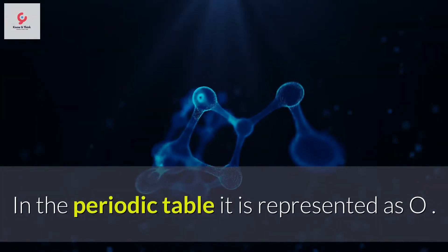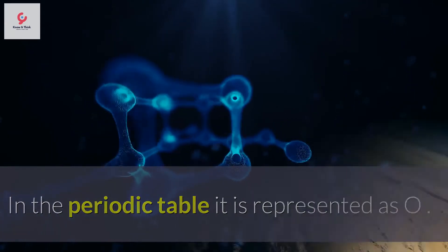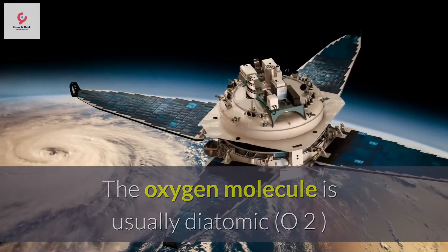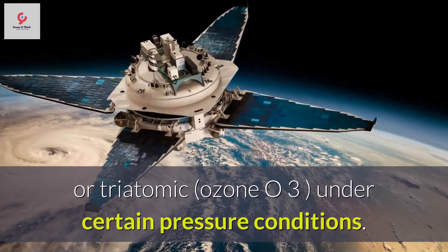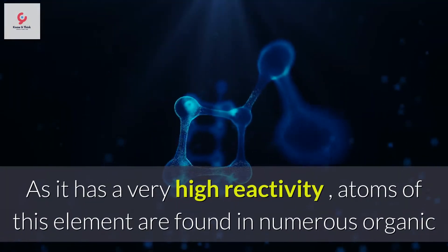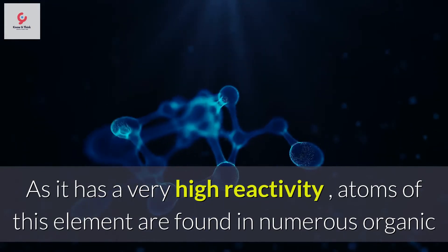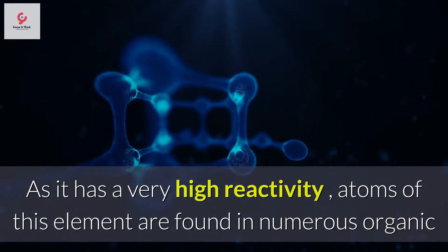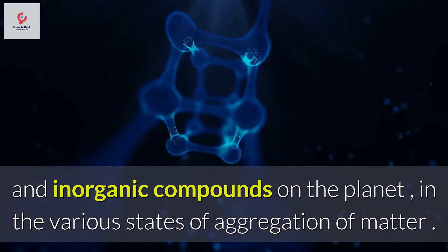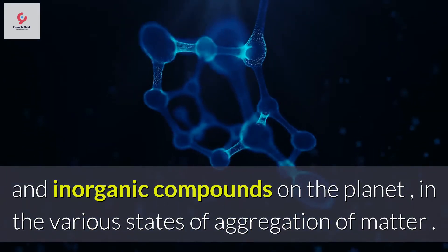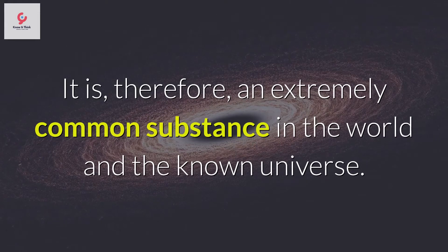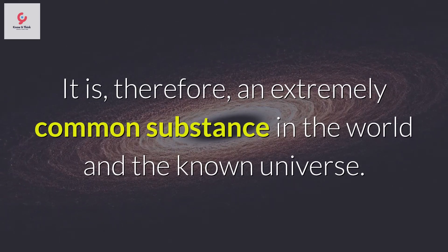In the periodic table it is represented as O. The oxygen molecule is usually diatomic O2, or triatomic O3, under certain pressure conditions. As it has a very high reactivity, atoms of this element are found in numerous organic and inorganic compounds on the planet, in the various states of aggregation of matter. It is therefore an extremely common substance in the world and the known universe.